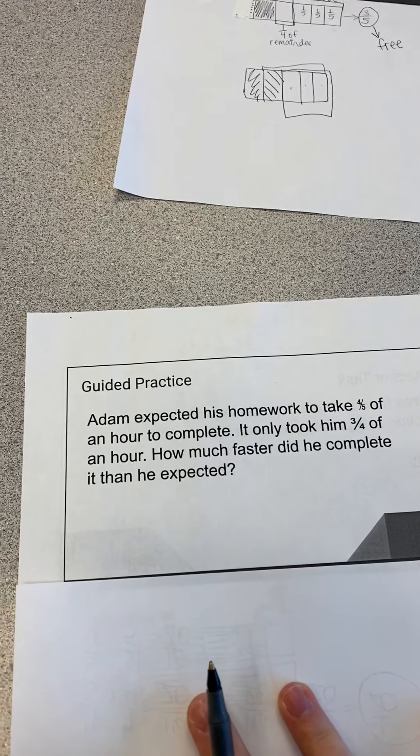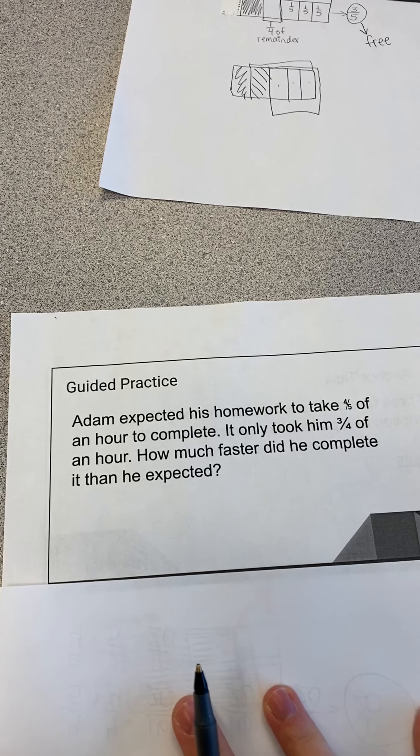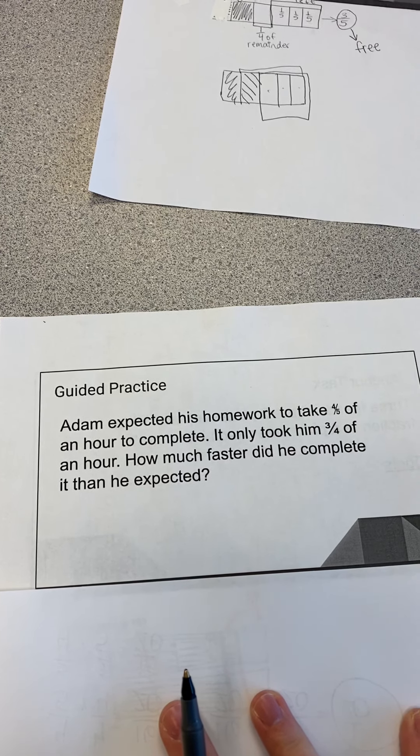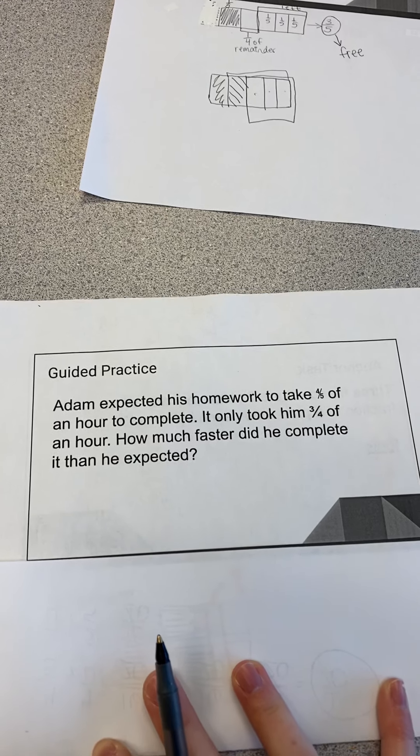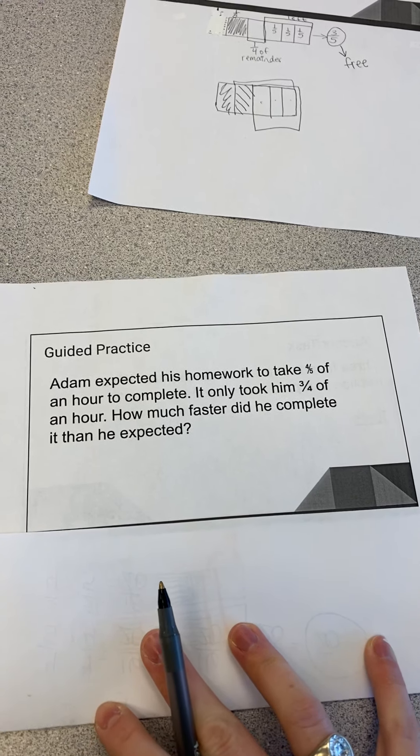Go ahead and try this problem on your own. Adam expected his homework to take him four-fifths of an hour to complete. It only took him three-fourths of an hour. How much faster did he complete it than he expected?